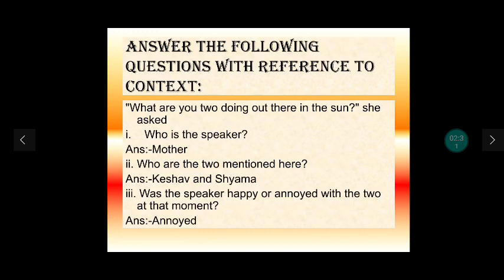Now answer the following questions with reference to context. कहानी के संदर्भ में आपको इन प्रश्नों के उत्तर देने हैं. Line: 'What are you two doing out there in the sun? She asked.' — तुम दोनों धूप में क्या कर रहे हो? उसने पूछा. Who is the speaker? यहाँ speaker कौन है? Answer: Mother. Who are the two mentioned here? वो दो हैं — Keshav and Shyama. Was the speaker happy or irritated? माँ खुश तो होगी नहीं — माँ नाराज है. So the answer is: irritated.